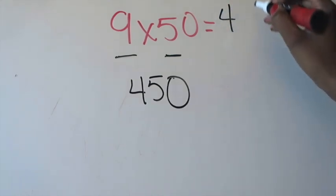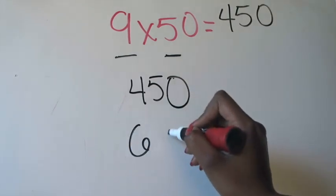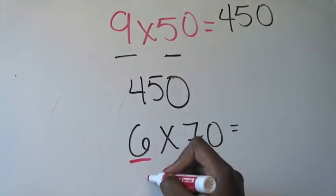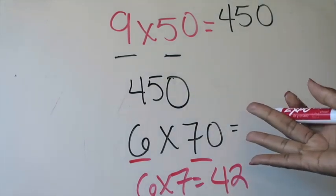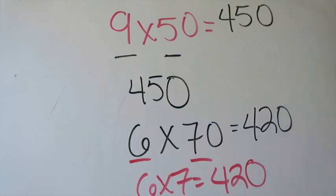I know that 45 tens is the same thing as 450. So the product of 9 times 50 is 450. Let's do one more — this time we're going to do 6 times 70. I'm going to use my cheat trick more explicitly this time. I look at my basic fact: 6 times 7, which I know is 42. Then I ask, are there any lonely zeros left over that I haven't brought down yet? There is one, so I'm going to bring that lonely zero down. And I know that my product for 6 times 70 is going to be 420.